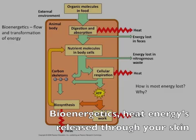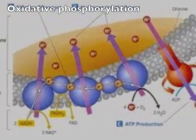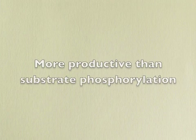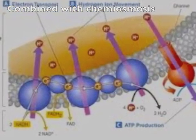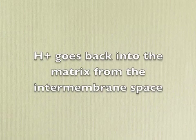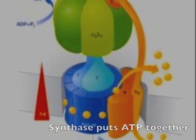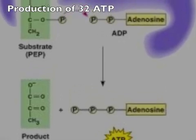Bioenergetics — heat energy is released through your skin. Second law of thermodynamics. Oxidative phosphorylation is more productive than substrate-level. Hydrogen goes into the matrix from the intermembrane space. Six ATP together, three hydrogens per rate — production of 32 ATPs.